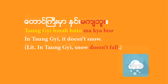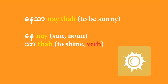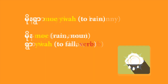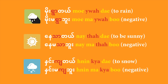You can apply this formula to many other compound verbs. For example, 'mo yuwa' means to rain — 'mo' is rain, noun, and 'yuwa' is the true verb meaning to shower, to come down. 'Ne ta' means to be sunny — 'ne' is sun, noun, and 'ta' is the operative verb meaning to be bright, to shine. So to negate them: 'mo mayuwa bu' means it's not raining, and 'ne ma ta bu' means it's not sunny.